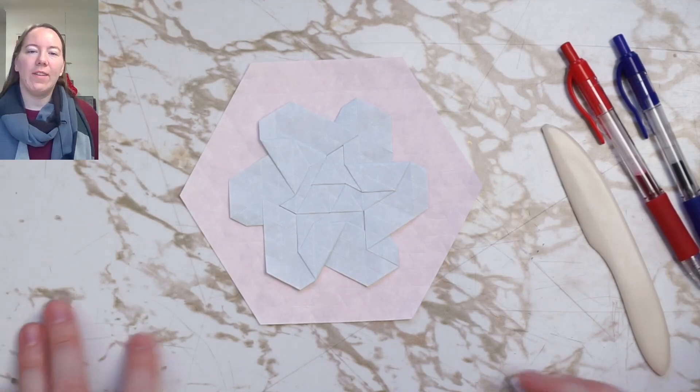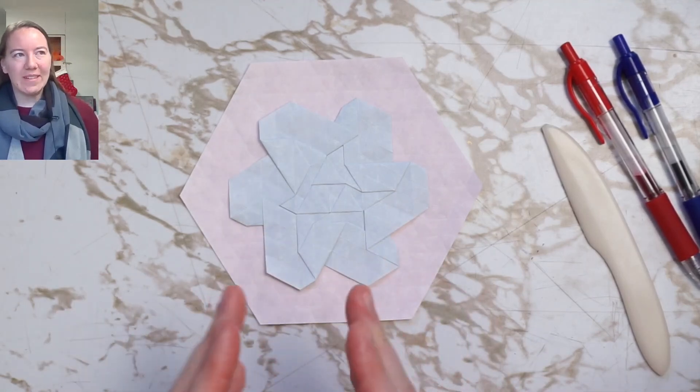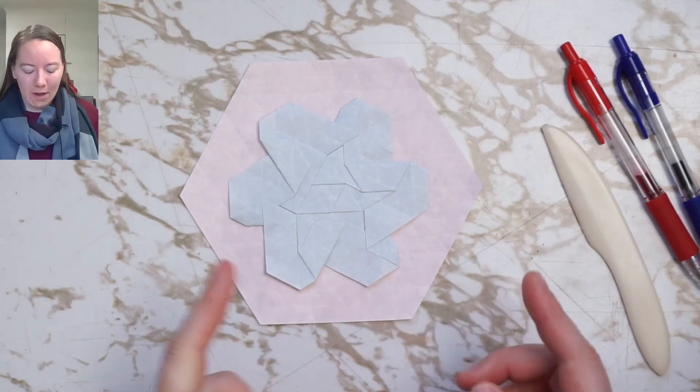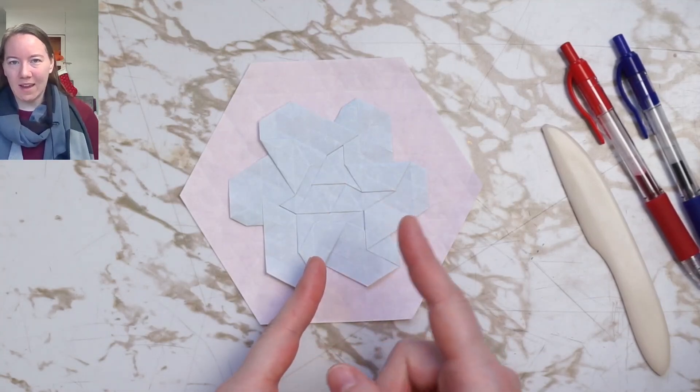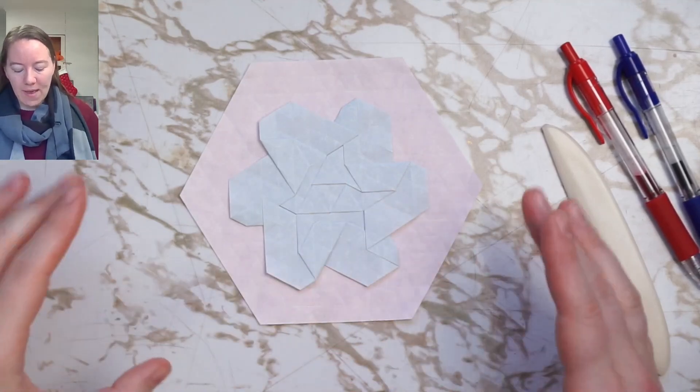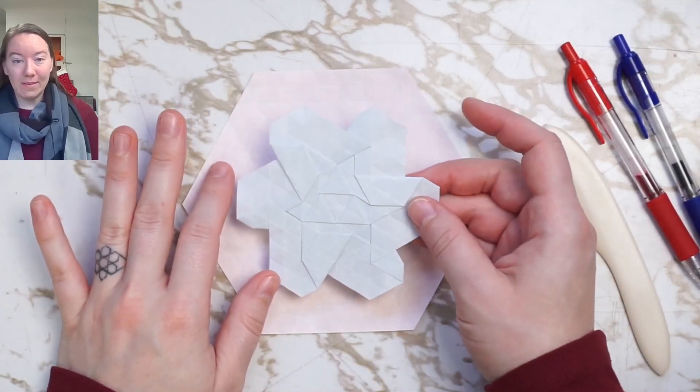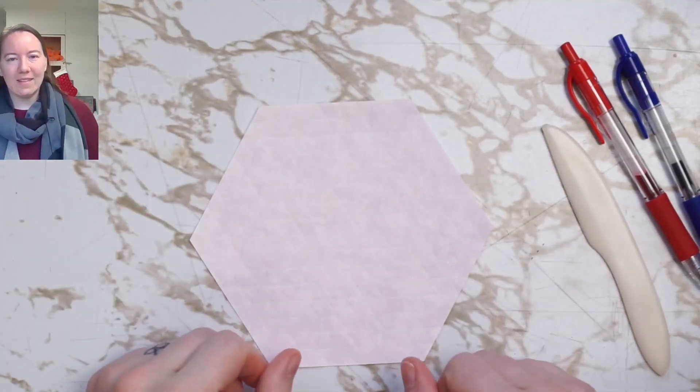On day 22 of Advent of Tessellations, we are introducing trapezoid twists, which is something we're going to continue using through day 25. So we're going to start with the exact same start as yesterday, as days four and five, and then we're going to put trapezoids around it. So grab your grid and let's get started.